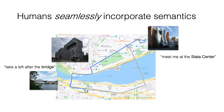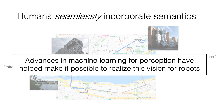Humans seamlessly incorporate knowledge of semantics in everyday navigation. To get from one place to another, we reason about where we are based on cues like buildings, street signs, cars, and more. We'd like to build more intelligent robots that can do the same — not just getting from A to B, but understanding their environment semantically. The ability to build, maintain, and use a map of semantic landmarks during navigation is key to developing more spatially intelligent robots. Moreover, recent advances in machine learning for perception have helped make it possible to realize this vision for robots.